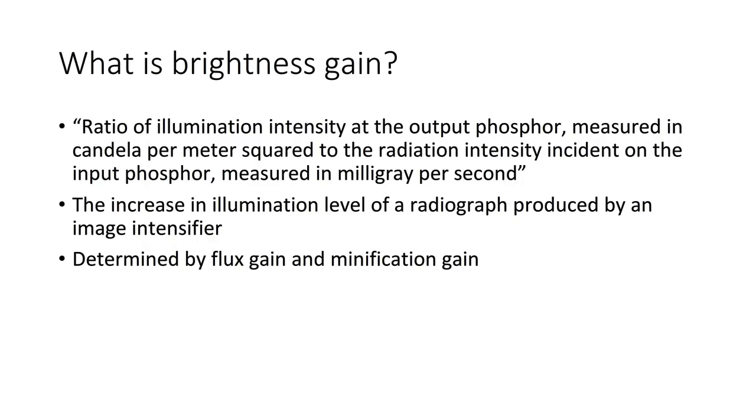Brightness gain is defined as the ratio of illumination intensity at the output phosphor measured in candela per meter squared to the radiation intensity incident on the input phosphor, which is measured in milligray per second. This definition tells you how much brightness is increased when comparing radiation at the input phosphor to when it is converted to light at the output phosphor.